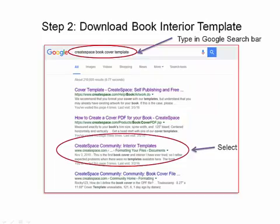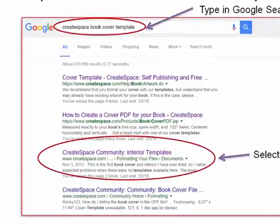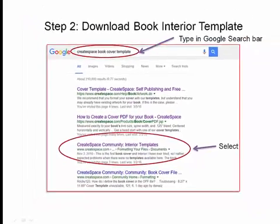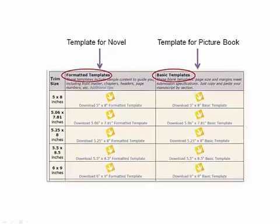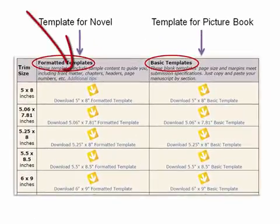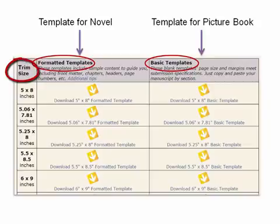So let's go to the next step. Now we need the actual interior of your book. Type 'CreateSpace book cover template' in the Google search bar again and select the third option — 'CreateSpace community interior templates' — and that will bring you to a page that looks like this. On the left we have templates for novels, on the right we have templates for picture books. Make sure you select the correct trim size for your book.